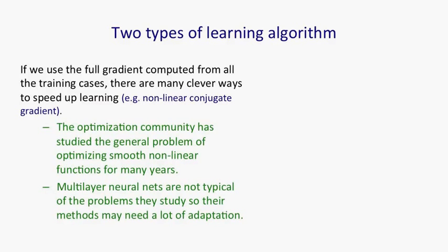Multilayer neural networks are pretty untypical of the kinds of problems they study, so applying the methods they developed may need a lot of modification to make them work for these multilayer neural networks.